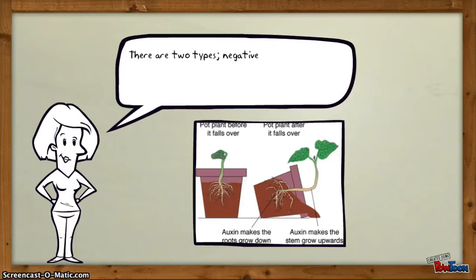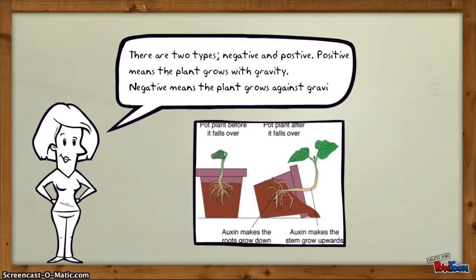There are two types, negative and positive. Positive means the plant grows with gravity. Negative means the plant grows against gravity.